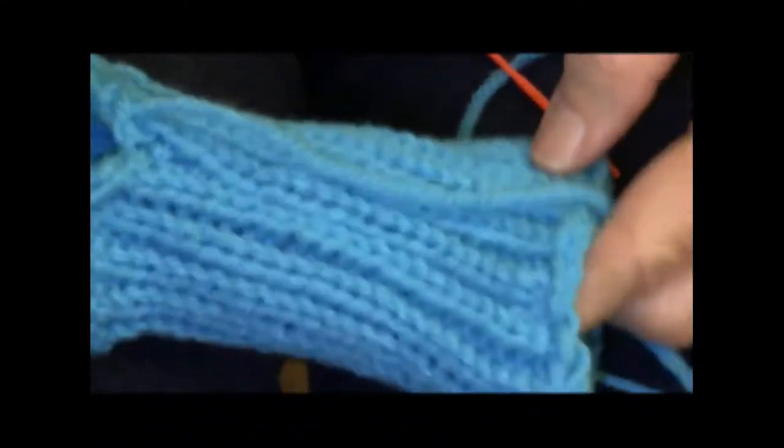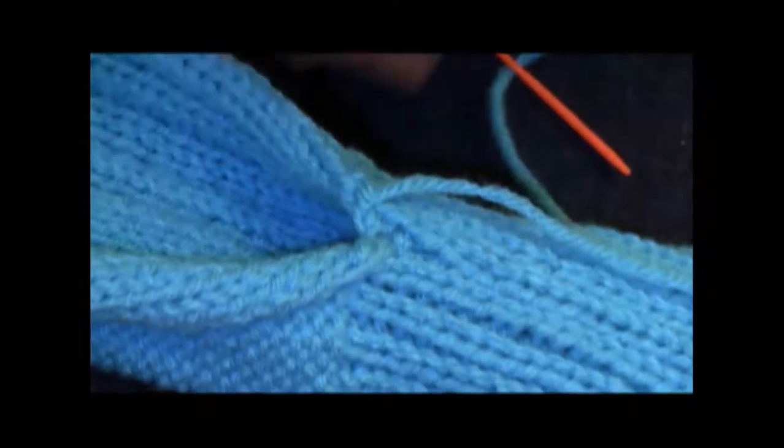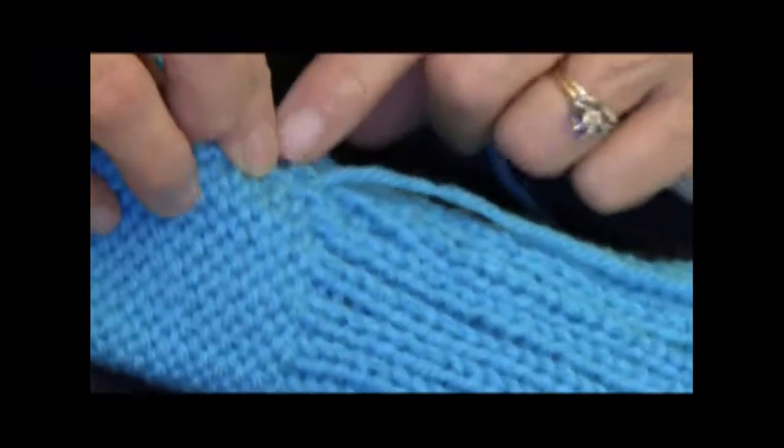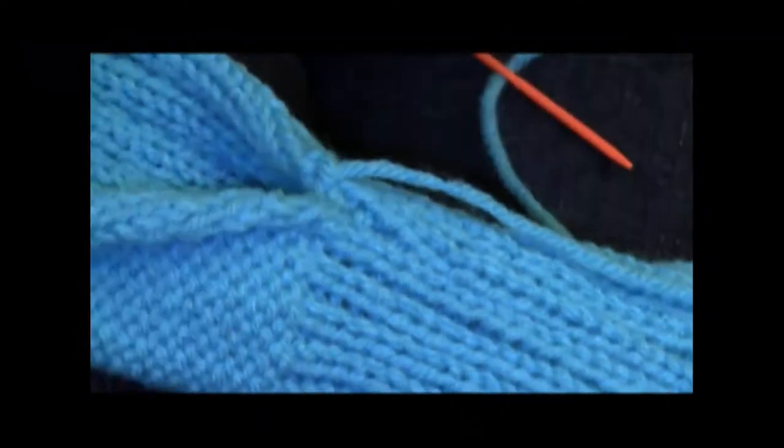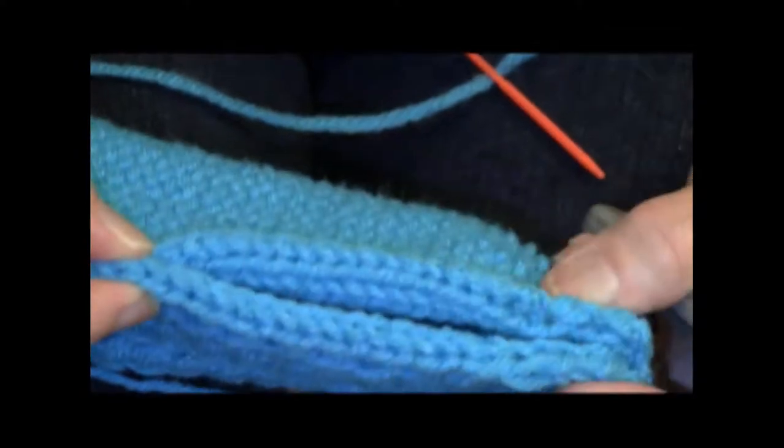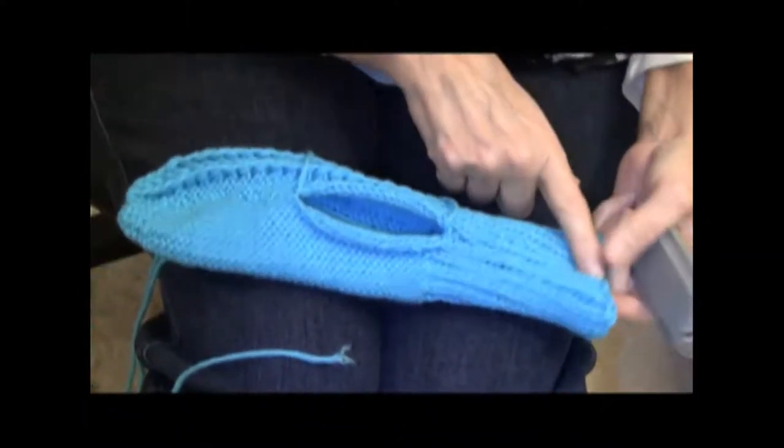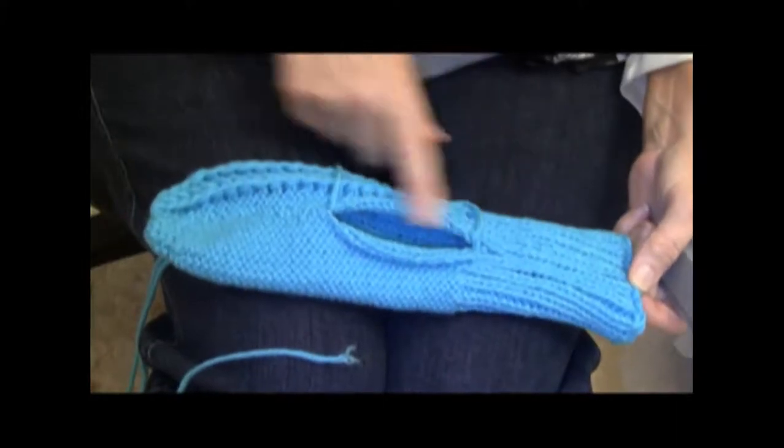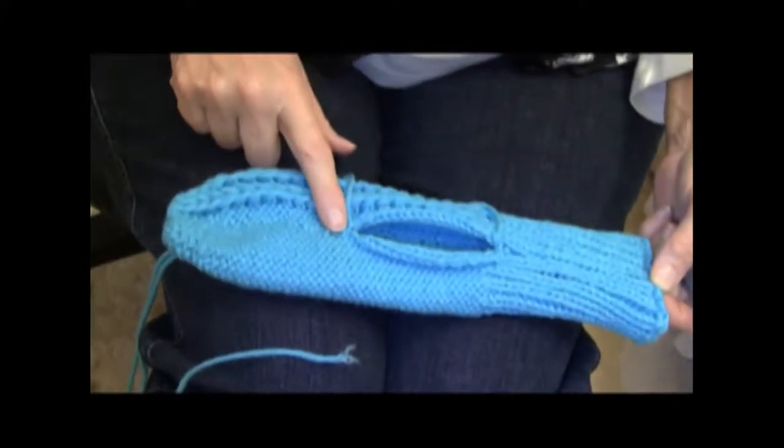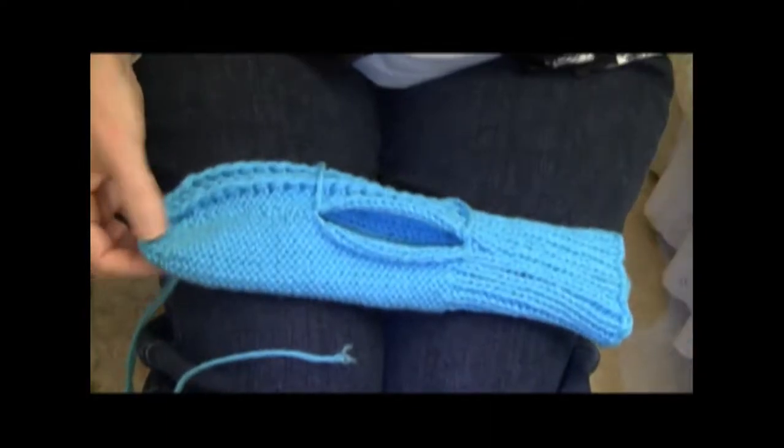I mattress stitch up the cuff of the mitten and stop when the ribbing stops. I stop exactly there. Then I'm going to mattress stitch from the top of the mitten down about halfway. Here's my side seam, the ribbing sewed, the hole for the thumb, and then the mattress stitch on up to the top of the mitten.